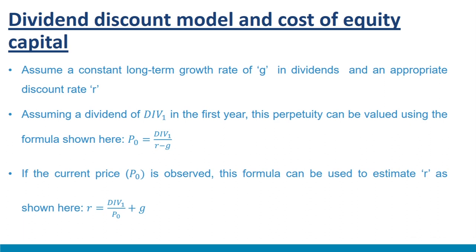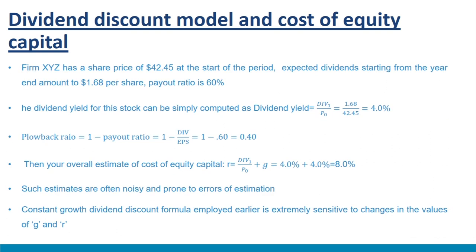If the current price P₀ is observed, this formula can be rearranged to estimate R: R = Div₁/P₀ + G. This formula shows that the discount rate R, or expected returns, equals the dividend yield (Div₁/P₀) plus the expected rate of growth G. This R is often referred to as the expected return or cost of equity. For example, to estimate the cost of equity for firm XYZ with a share price of $42.45 and expected dividends of $1.68 per share, the dividend yield = 1.68/42.45 = 4%. Estimating the long-term growth rate G is rather more difficult.